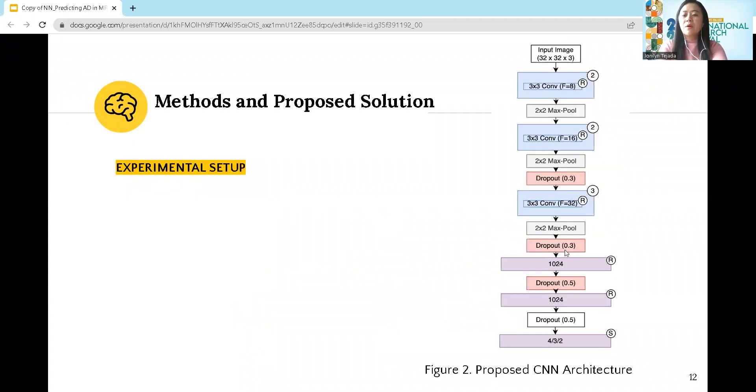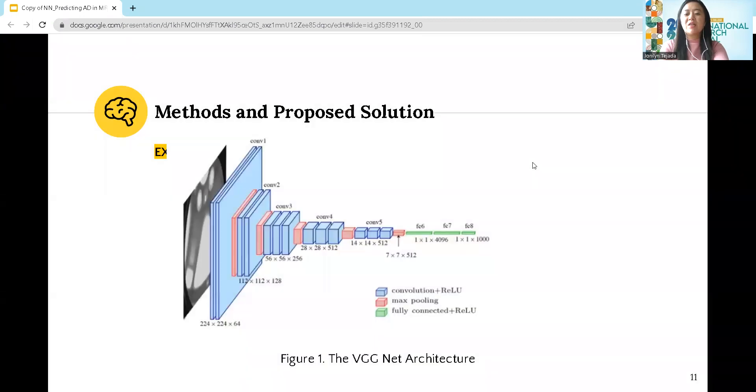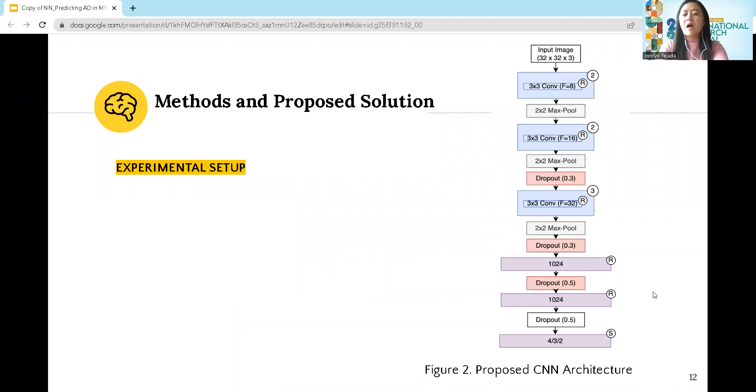The fully connected layers have also been reduced from 4,096 in VGG. We reduced the fully connected layers to 1,024. Also, strides are not employed in this study.